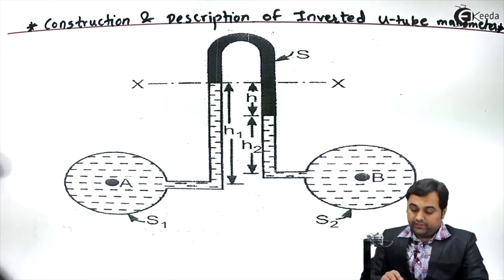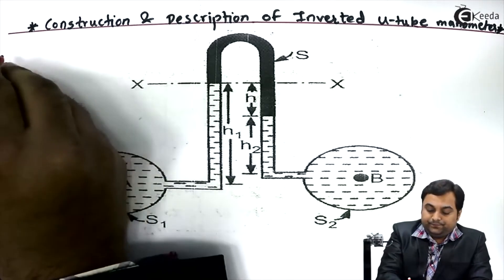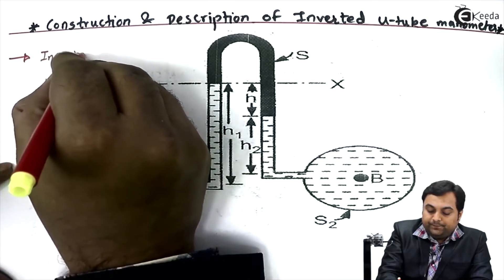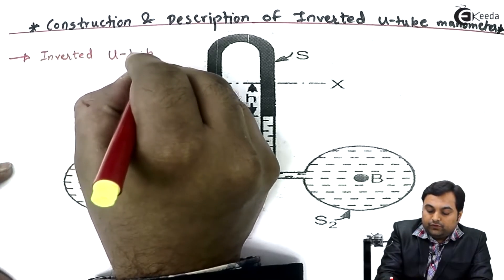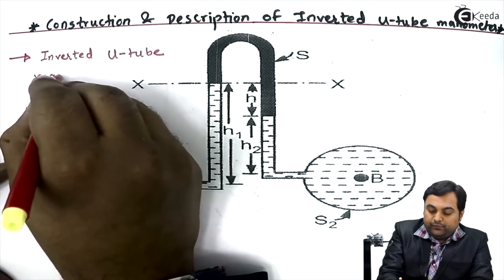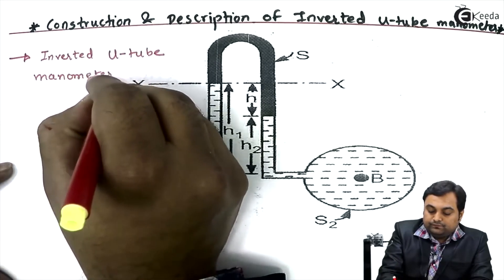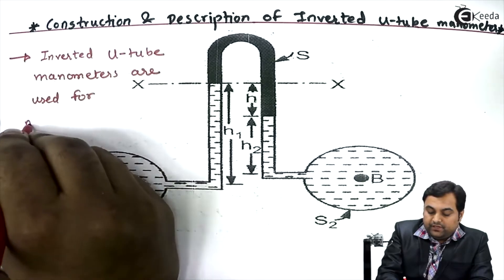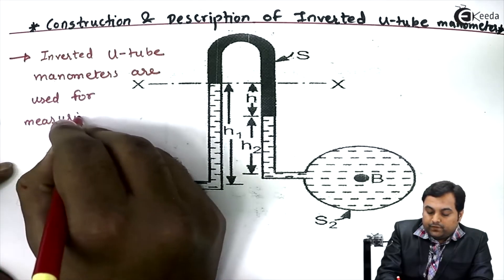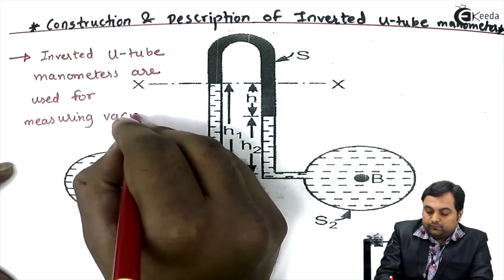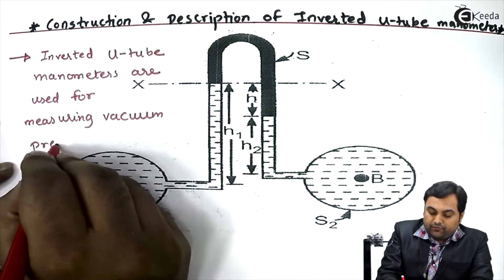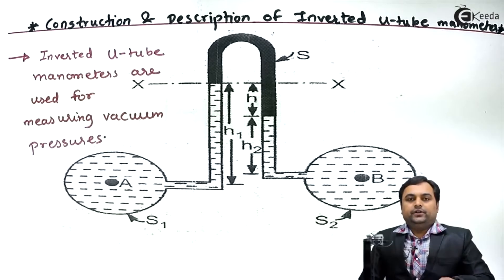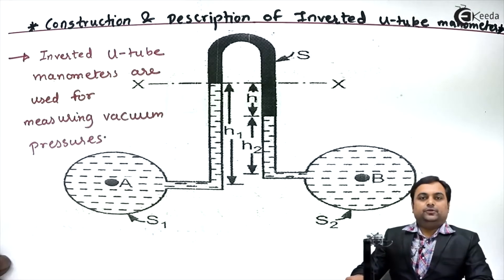Now the important thing to understand here is that inverted U-tube manometers are used for measuring vacuum pressures. This is a very important point here.